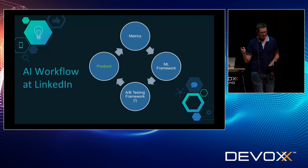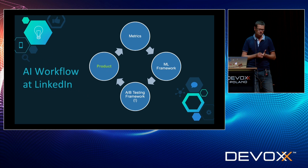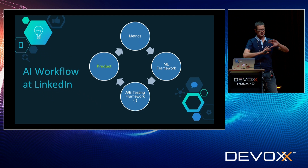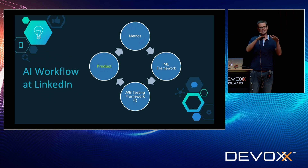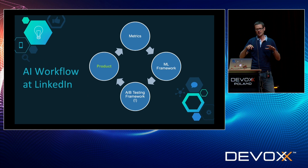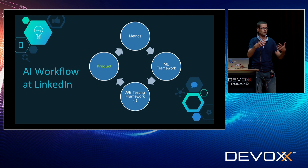Let's zoom into the AI workflow at LinkedIn. On the high level, everything starts with the product — we have a vision and product managers, engineers, and executives design what the product should be doing. Once we have our true north and our goal, we go into metrics. Metrics help us identify whether we are evolving the platform in the right way — are all those features we're building moving us in the right direction? The famous quote we always use at LinkedIn is: you can only fix what you can measure. So being data-oriented is very important.